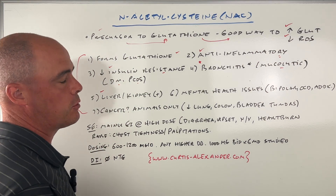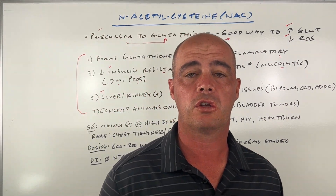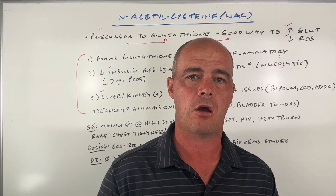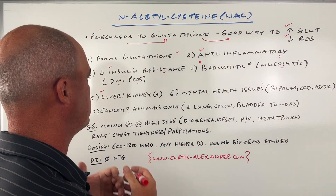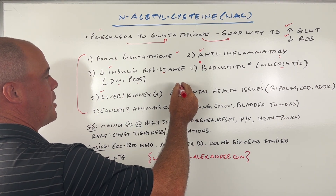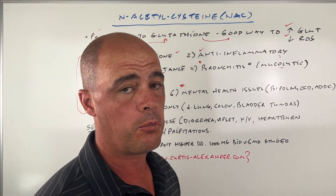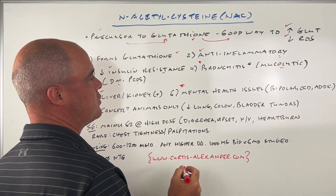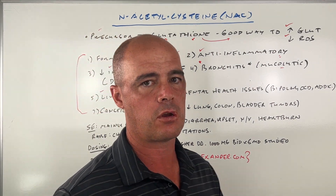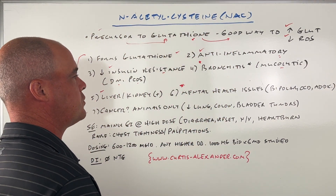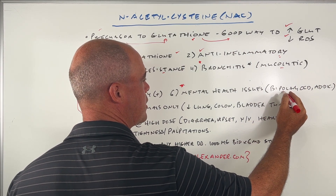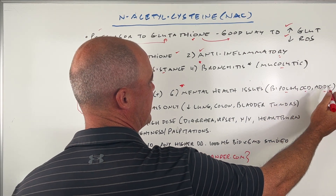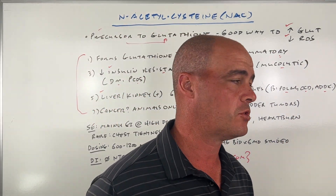It does appear to be liver and kidney protective. For example, it's used as an antidote in Tylenol overdose — Tylenol can be extremely hard on our livers — so that's fairly well established. There is also some evidence to suggest it may help with mental health issues, and again we're coming back to the glutathione component. It does make sense there can be somewhat of a calming effect in the nervous system. We have seen reports of positive results with bipolar disease, obsessive compulsive disorder, and even addiction.